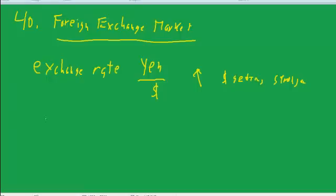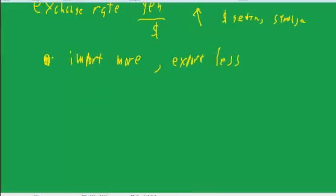First of all, are we going to export more? Are we going to import more? If the dollar is getting stronger and yen are getting cheaper, then we're going to import more because Japanese goods will be cheaper. And by the same token, we'll export less because American goods will be more expensive. So the dollar getting stronger is not good for the trade balance.